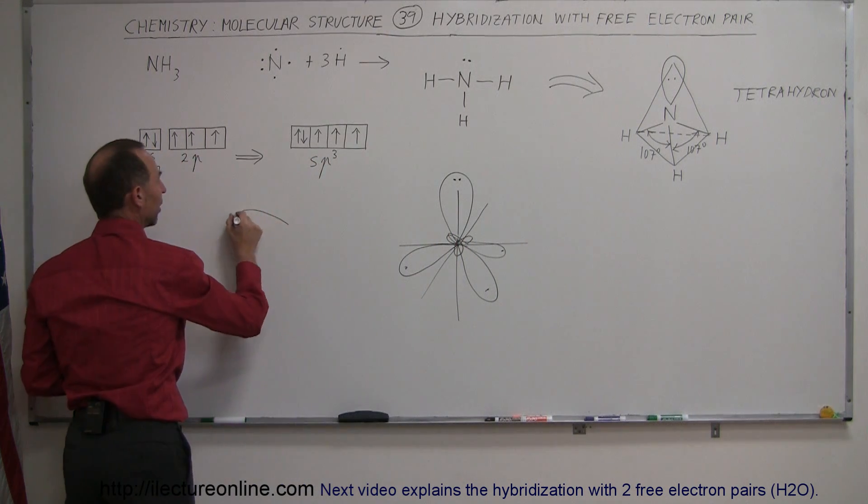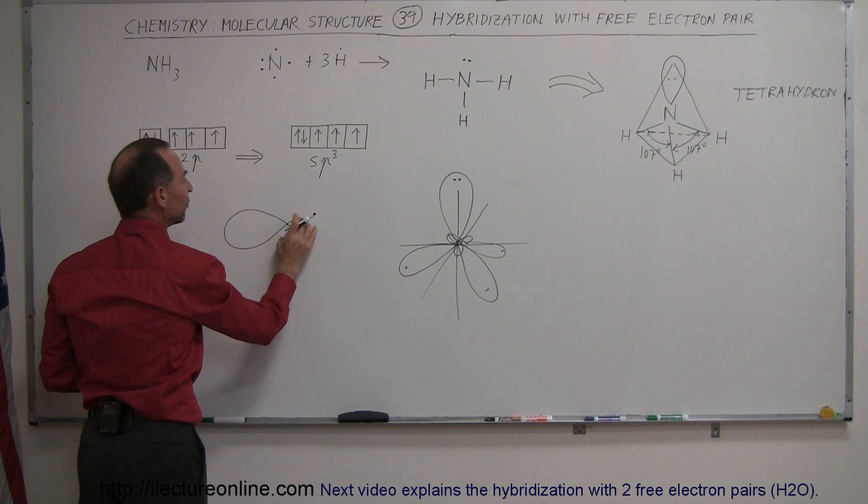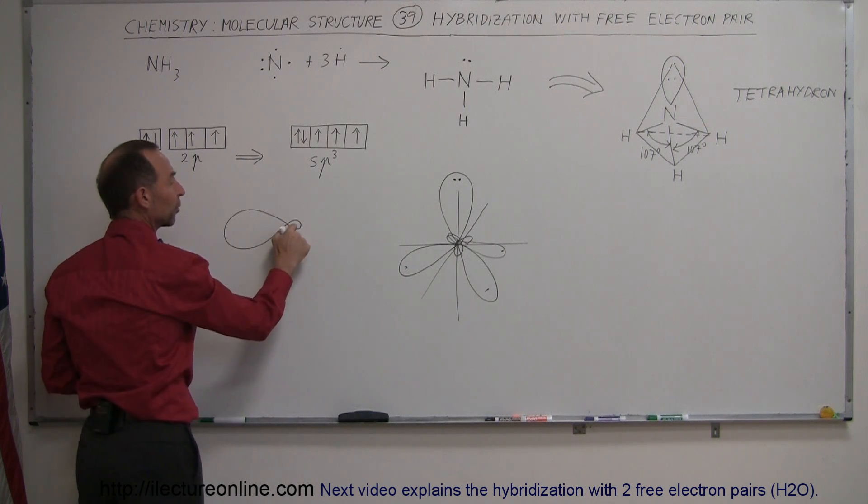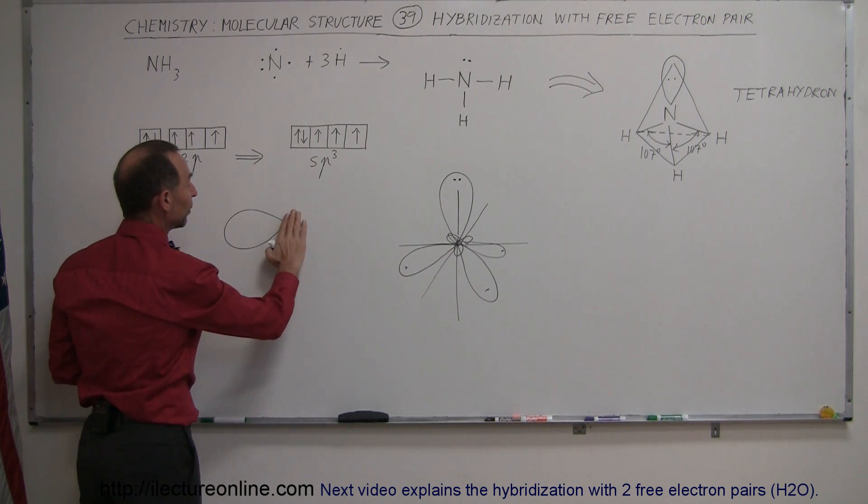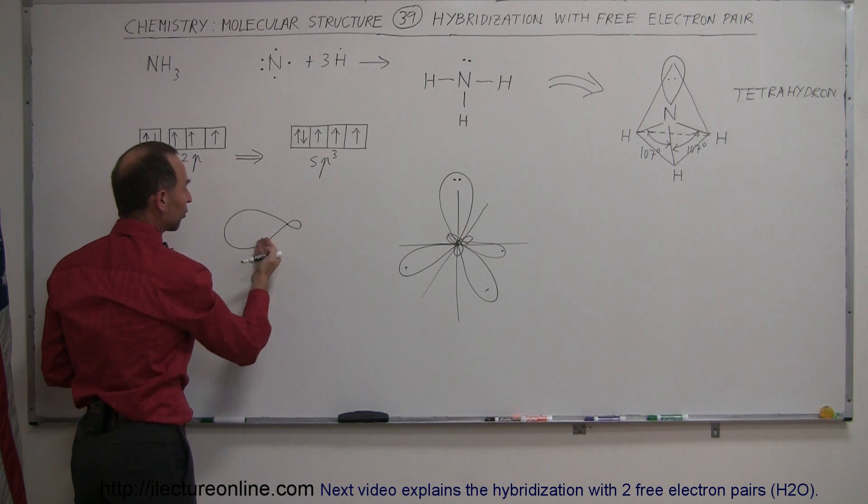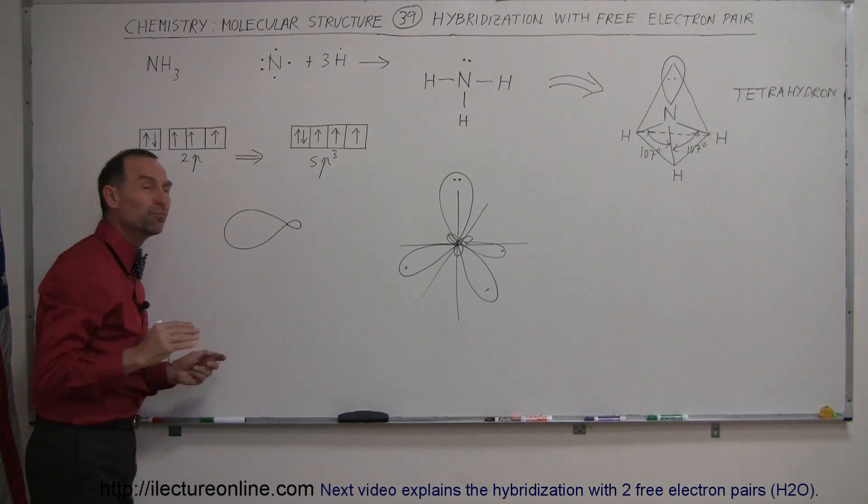Notice that hybridized orbitals tend to look like that in shape. Even though there's a small possibility for the electron to reside there a small amount of the time, we tend to ignore that and just look at the large portion of the orbital where the electron is most of the time.